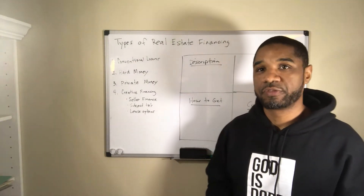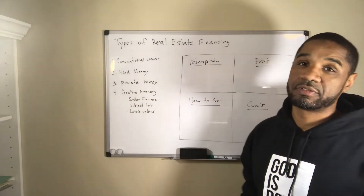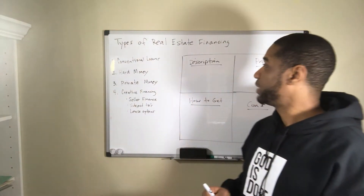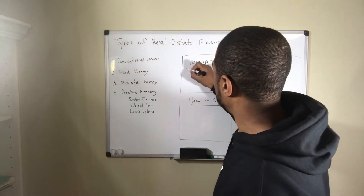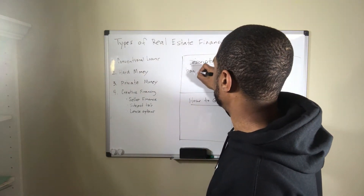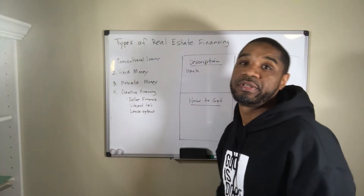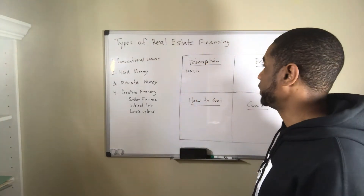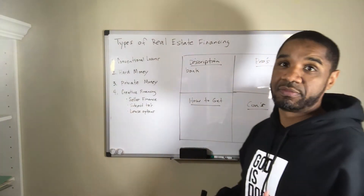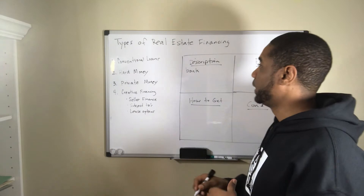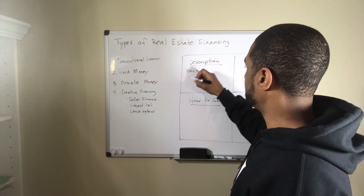The very first financing method is conventional financing. Conventional financing is going to be basically through a bank — your local bank, your credit union, Wells Fargo, SunTrust, any of those types of institutions. A bank is going to be your major financing source for conventional loans.